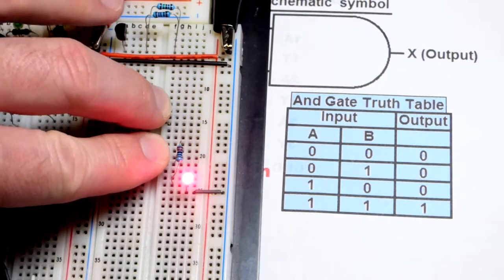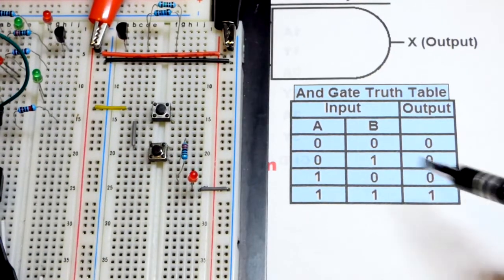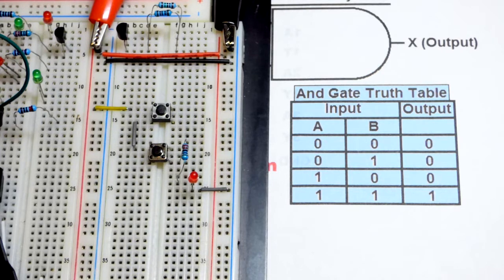So we press both of them at the same time. And the LED is on, or high, or one. However you want to name it, depending on the type of circuit. So this is an on-off circuit for the most part. So we'll go with that.